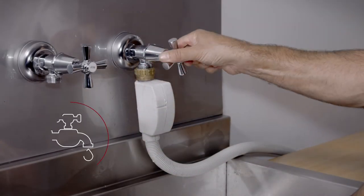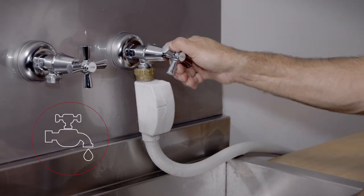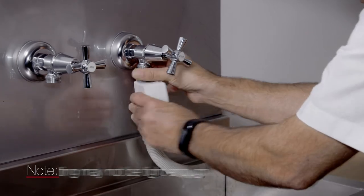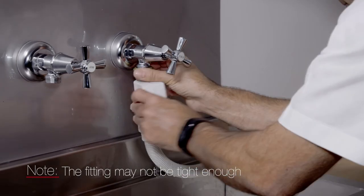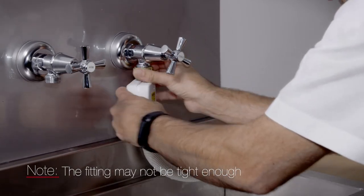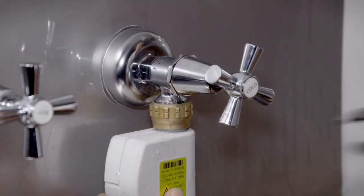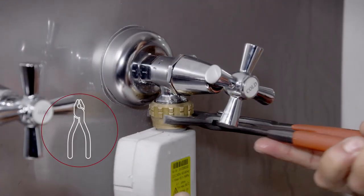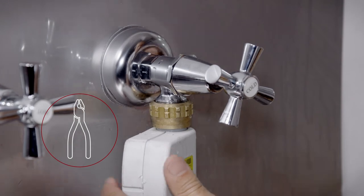Turn on the tap slightly to test for leaks. If there is a leak, the inlet hose may not be connected correctly. Check the inlet hose and reconnect again. We recommend using multi-grip pliers to tighten the inlet hose if it's difficult to connect by hand.